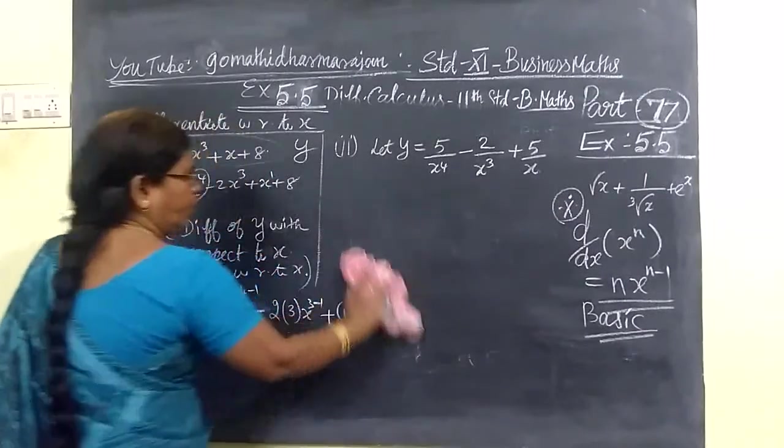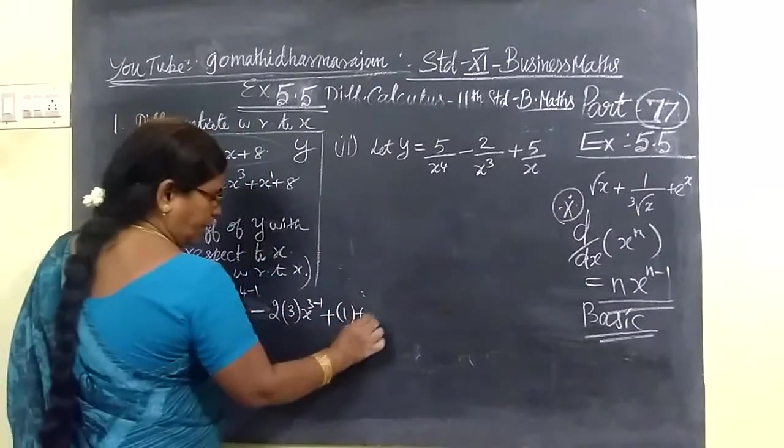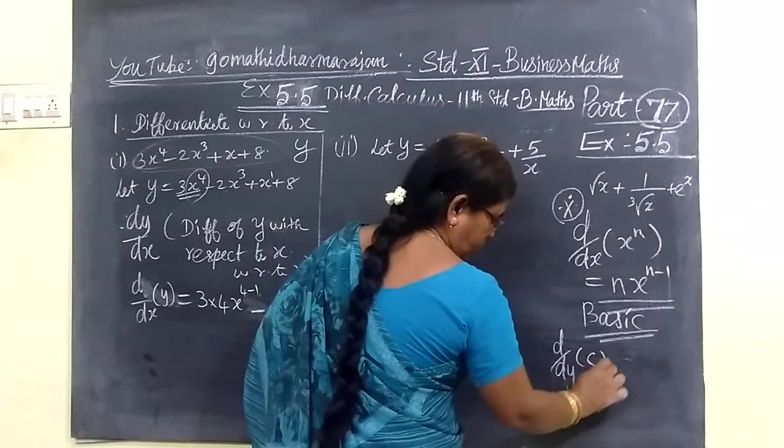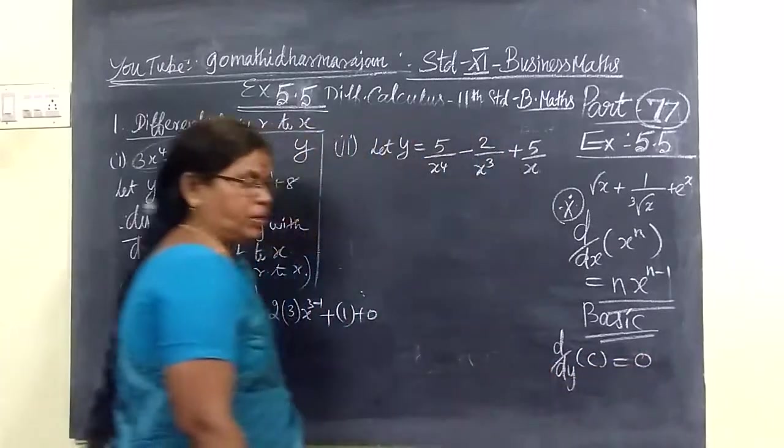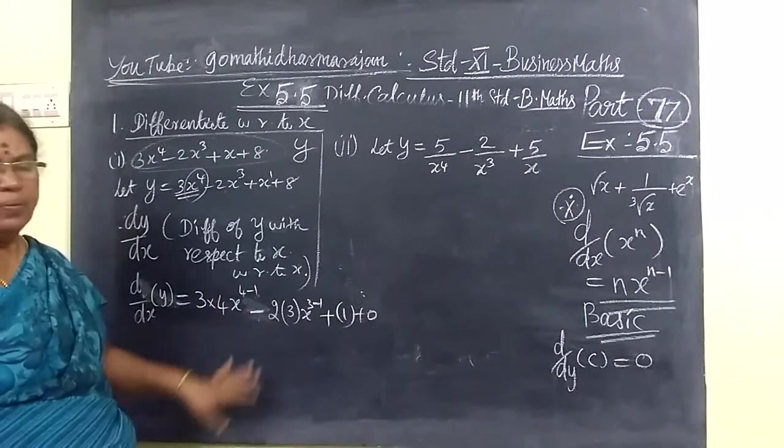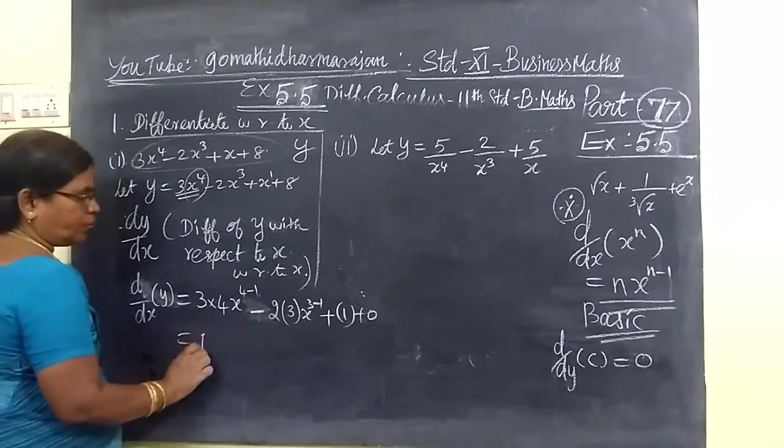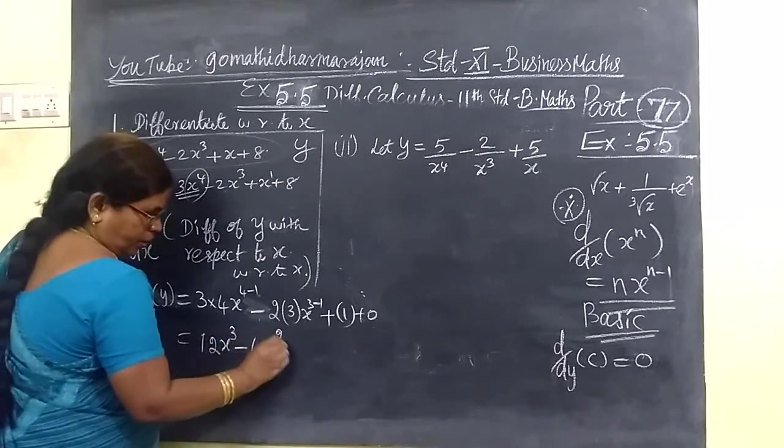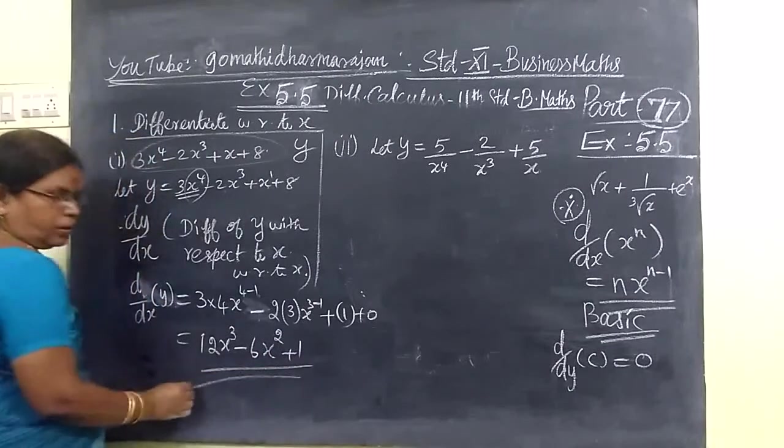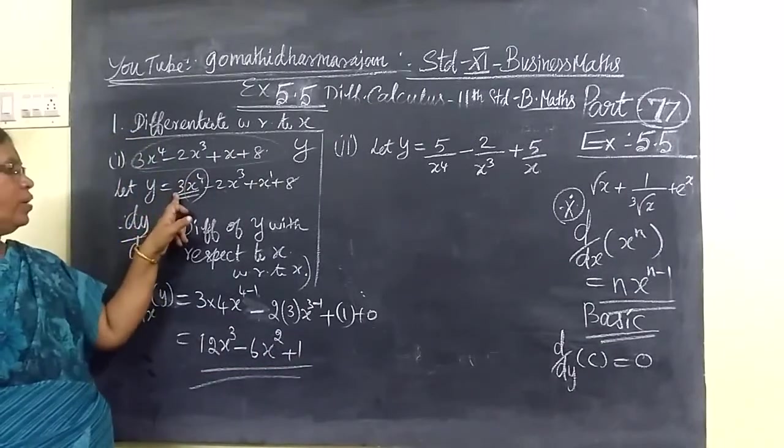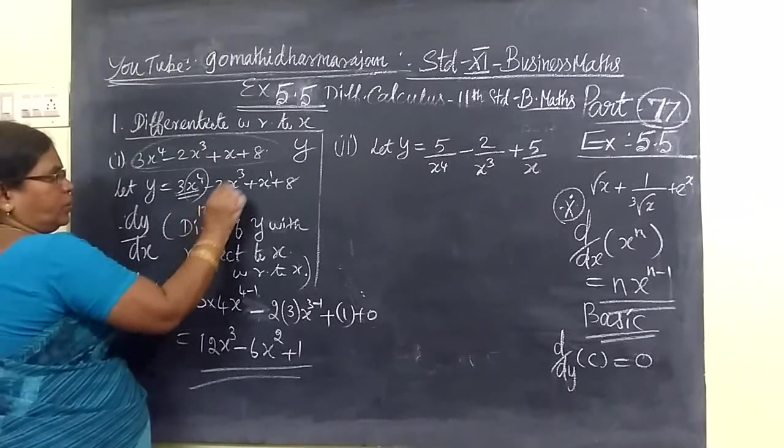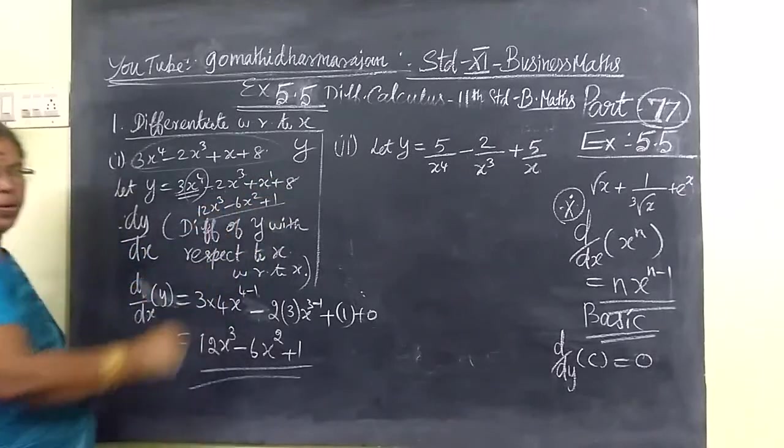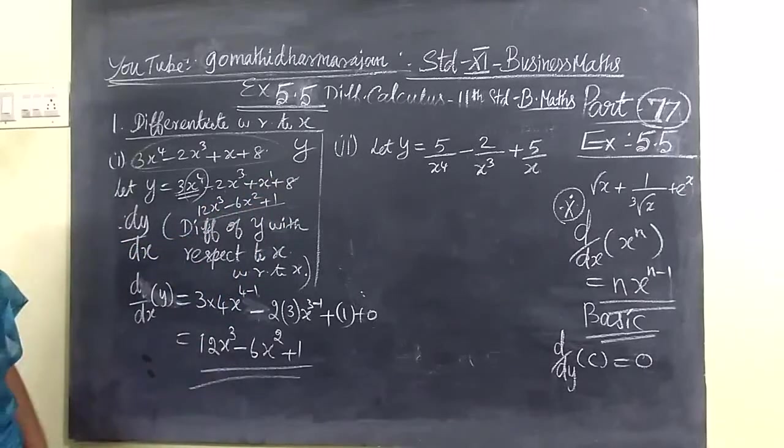So x in the variable you find, you just write 1, then 8 constant number. Differentiation of constant, differentiation of constant equal to 0. This will be the formula. So 3, 4 times 3 is 12x³ minus 6x² plus 1. This is directly answer.